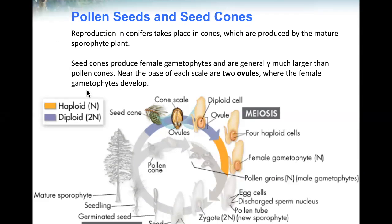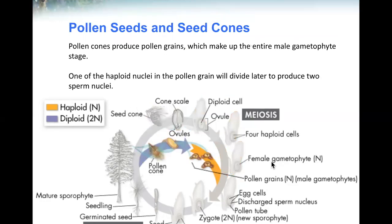In the cycle, the seed cone's scales contain ovules. The diploid cell on the ovule goes through meiosis, producing four haploid cells, forming the female gametophyte — haploid. Pollen cones produce pollen grains, which make up the entire male gametophyte stage — also haploid.